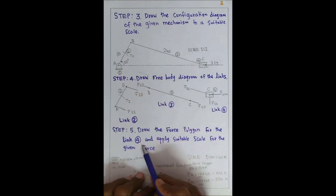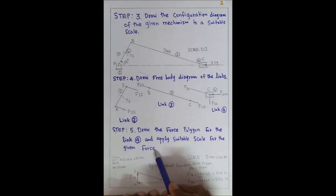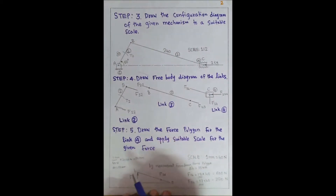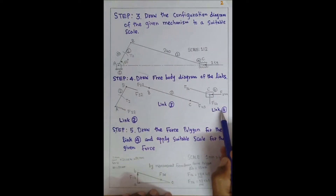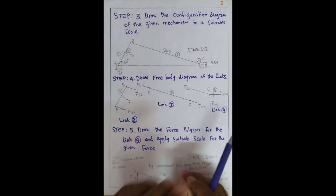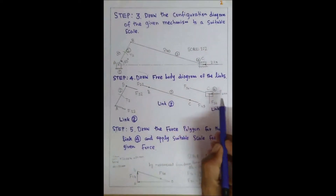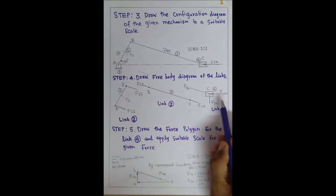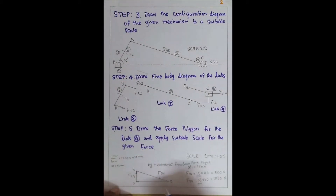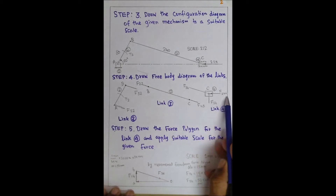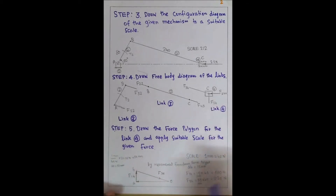Step 5 — draw the force polygon for link 4 and apply a suitable scale for the given force. We select link 4 because three forces act on it and one is known. The known force is 2 kN acting horizontally from right to left. To draw the force polygon, first mark point O.